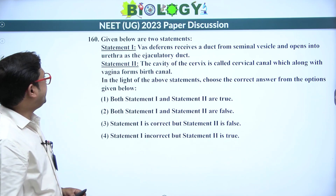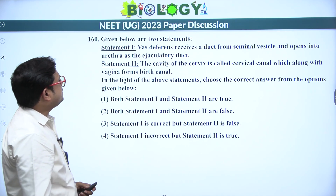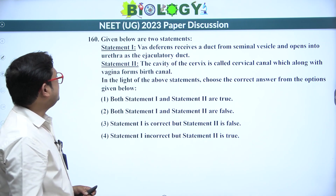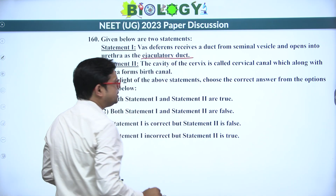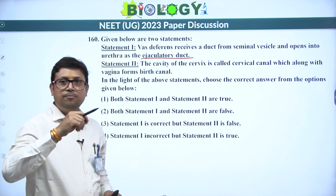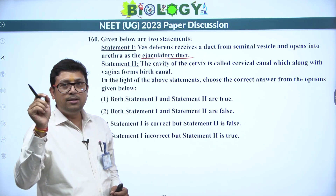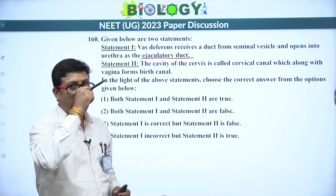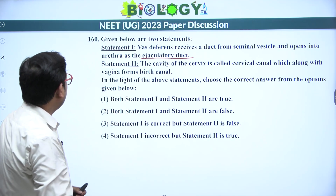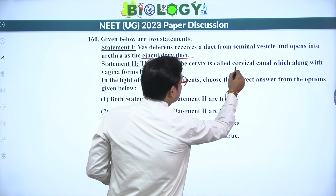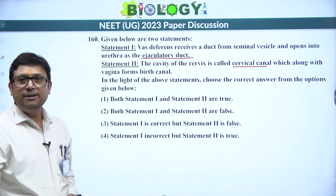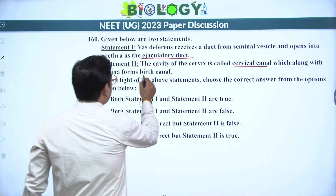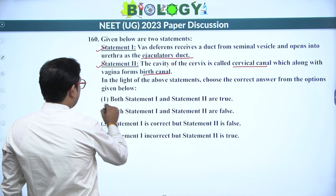Next statement-based question: vas deferens receives a duct from the seminal vesicle and opens into the urethra as the ejaculatory duct — true. Vas deferens from the testis joins the duct of the seminal vesicle to form the ejaculatory duct, which opens into the prostatic urethra. The cavity of the cervix is called the cervical canal; along with the vaginal canal it is called the birth canal — also true. Both statements are true — answer is 1.